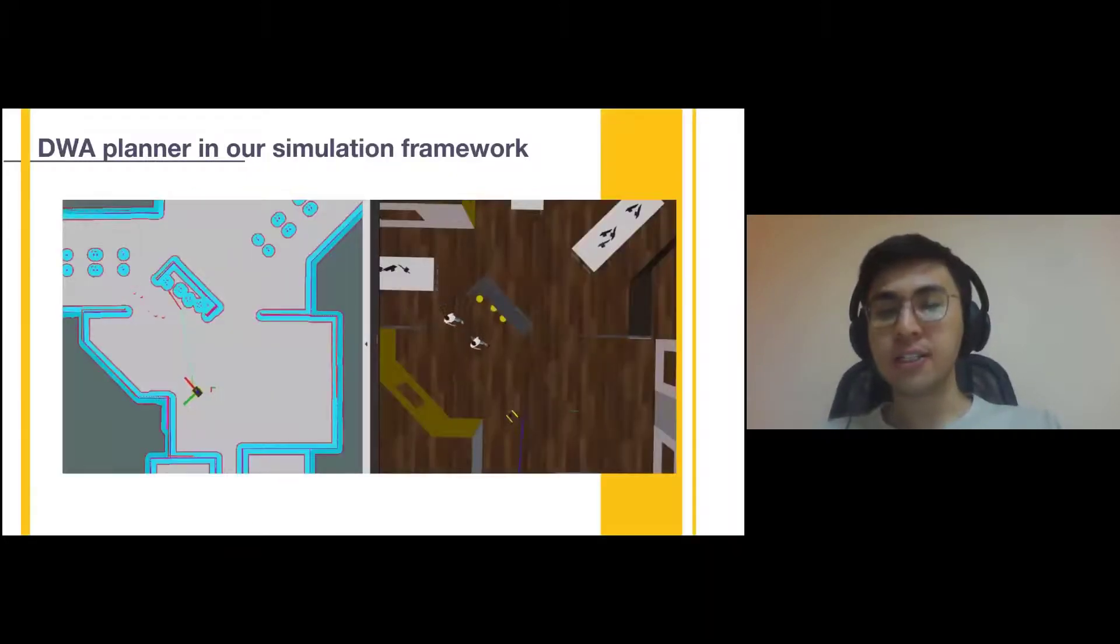In the next slide, we have integrated dynamic window approach local planner. The DWA local planner is a simple trajectory following algorithm that performs well in static environments. However, due to its design limitations, the DWA simply interprets all data coming from the laser as static obstacles, and therefore it is not able to predict the human intentions properly and plan paths in a way that is not disruptive to pedestrians.